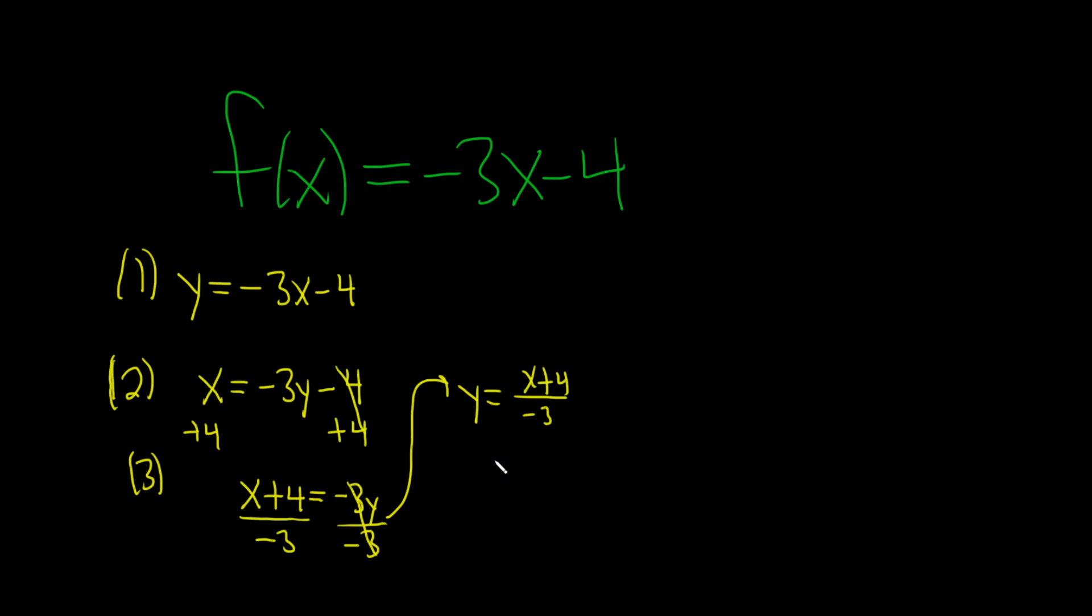And what you can do here is you can write it like this if you want. X over negative 3 plus 4 over negative 3. And then you can do this. This is nice. Watch. Negative 1 third times x. Same thing, right? And then minus 4 thirds. That's much better.